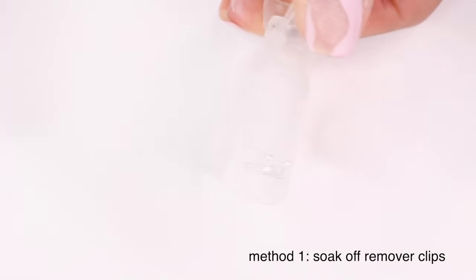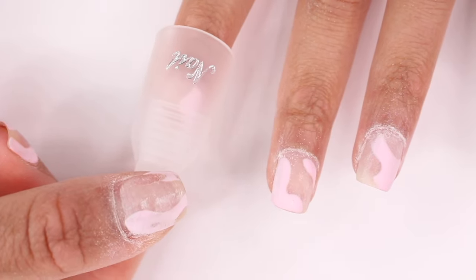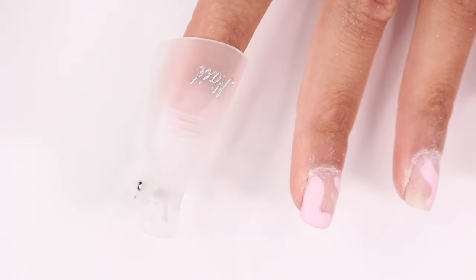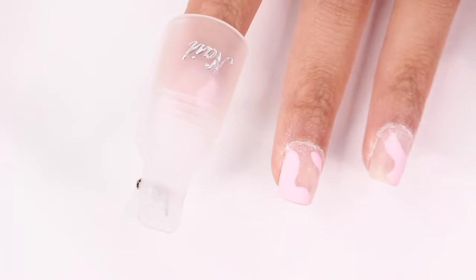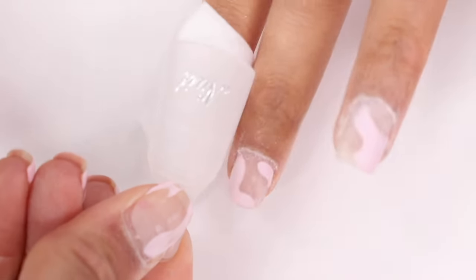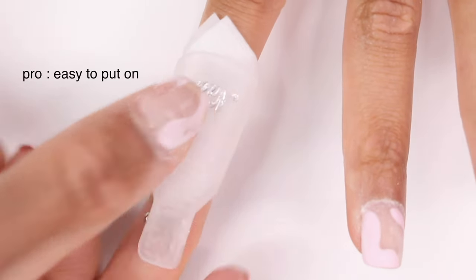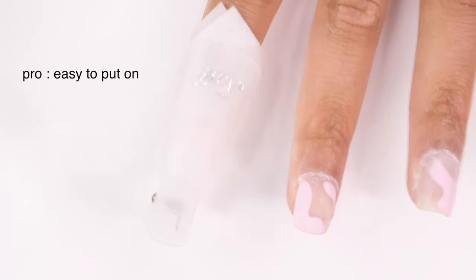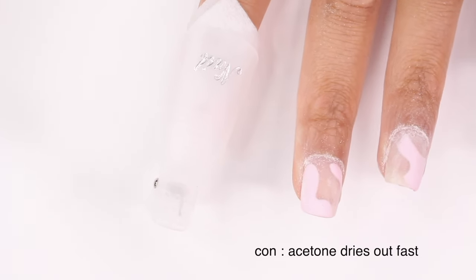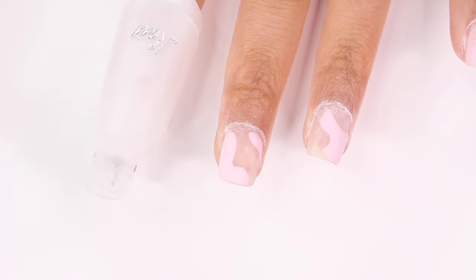This is using soak off remover clips. I get these from Amazon. I do have to say this is probably my least favorite method out of all the ones I'm going to show you guys, just because the acetone doesn't last long with these. But what you're going to do if you decide to use these is grab a lint-free cotton pad or a cotton ball and really just saturate it with your acetone. And then you're just going to place it on your nail and then place the clip on top. So one thing I do like about these, they're just really easy to clip onto your nail. But again, because it's not really sealed in, it does dry out quickly. So you might have to replace the cotton pad a few times. But regardless, it's going to get the job done.